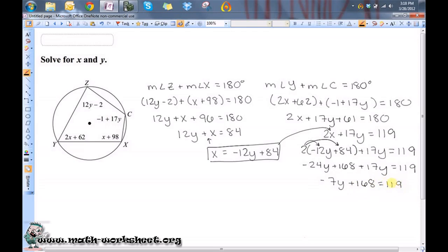And now I just need to subtract 168 from both sides. So I'll have negative 7Y equals negative 49. And then divide both sides by negative 7. So that gives me Y equals positive 7.